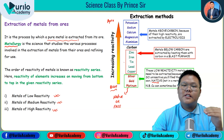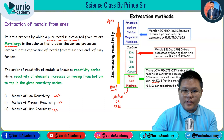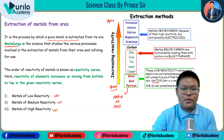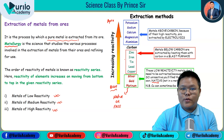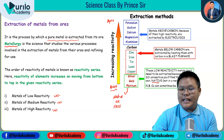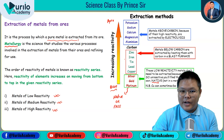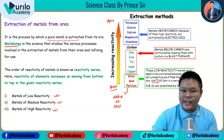Now, we are going to look at medium reactivity metals. Examples include zinc, iron, tin, lead, and copper — these are classified as medium reactive metals.